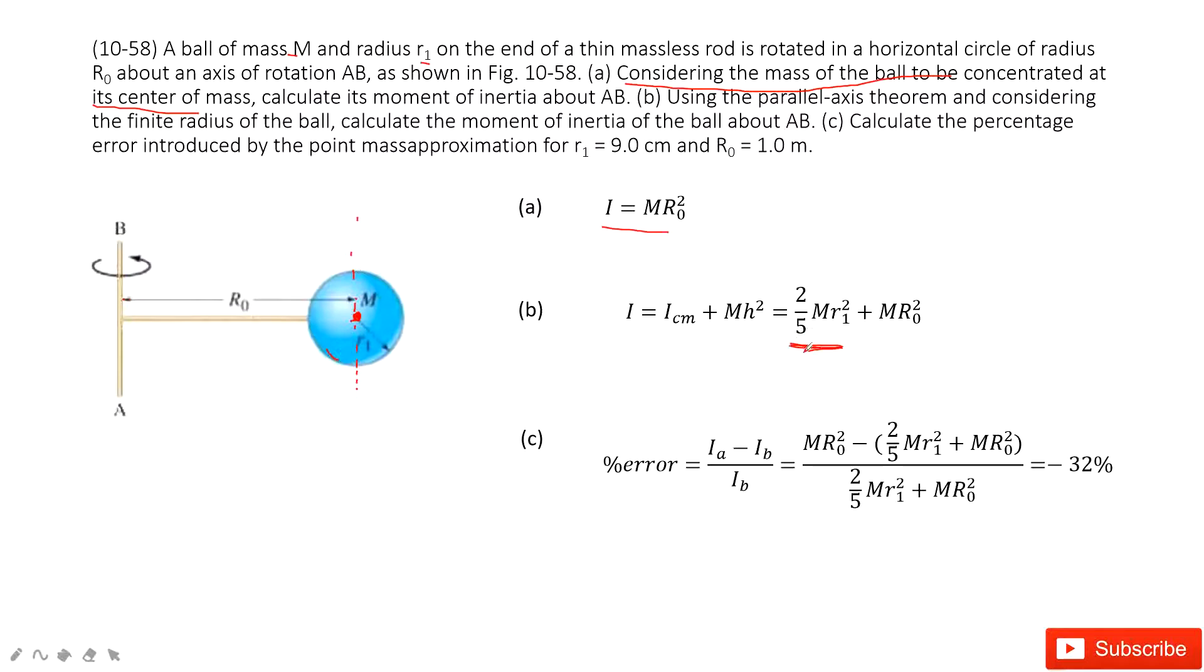You can check this in the textbook. From the rotation axis to the center of mass, the distance is R0. We square it and add it together to get the result.